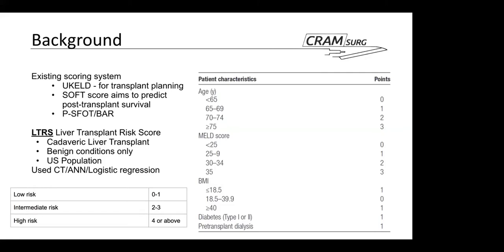In this context, the LTRS was developed in the US based on cadaveric liver transplant patients' data for indications that are purely benign, excluding any metastatic or primary liver tumours, and is based only on US population data. The authors, who originally described the LTRS and are also involved in the production of this paper, used a variety of machine learning techniques, including neural networks and also logistic regression to design this score.